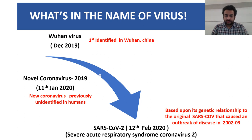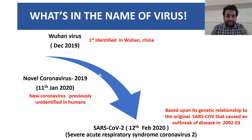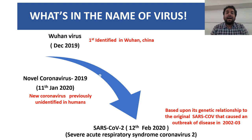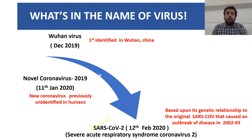So what's in the name of the virus? You might have heard quite a few names, but what is the rationale and the science behind each terminology? In December 2019, it was first identified in Wuhan city of China, so it was called the Wuhan virus or even Chinese virus. On 11th of January 2020, it was known as novel coronavirus 2019 — novel because it was previously unidentified in humans. On 12th February 2020, the International Committee on the Taxonomy of Viruses (ICTV) called it SARS-CoV-2, which stands for Severe Acute Respiratory Syndrome Coronavirus 2, named due to its relationship to the original SARS coronavirus that caused an outbreak in 2002–2003.